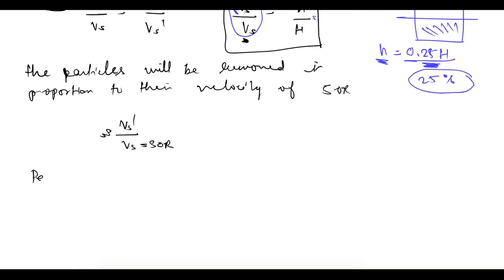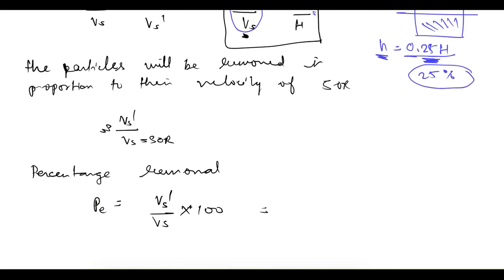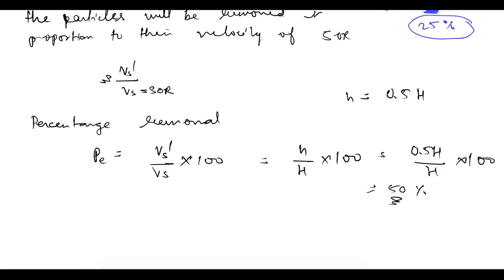The percentage removal can be written as: P = (Vs' / Vs) × 100 = (h / H) × 100. For example, if h = 0.5H, then P = 50%. Both ratios — Vs'/Vs and h/H — give the same answer, confirming the relationship.